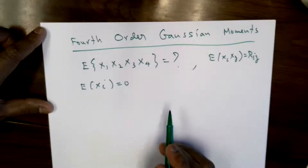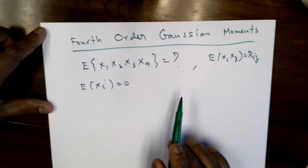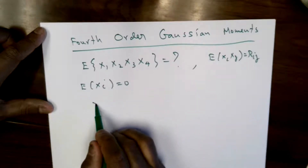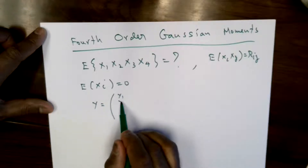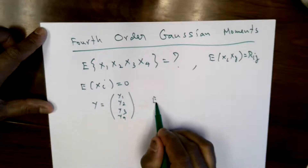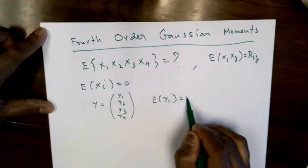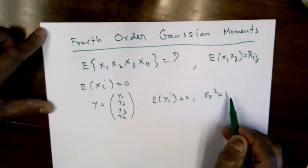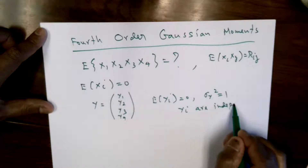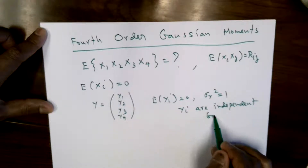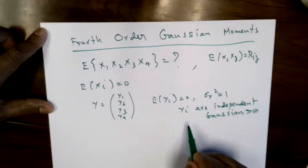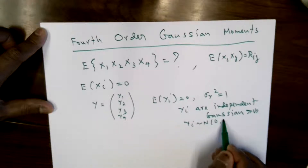To do this, we'll use the characteristic function — that's the easiest approach. Let me start with a set of random variables which are independent. I'm going to start with this vector where each of the y_i's are zero mean, their variances are one, and the y_i's are independent. So they are independent, identically distributed Gaussian random variables — zero mean and unit variance.